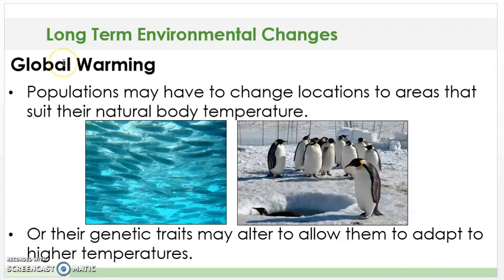Also with global warming, populations may have to change locations to areas that suit their natural body temperature, or their genetic traits may alter to allow them to adapt to higher temperatures. So if they don't adapt to survive, they will eventually die out.